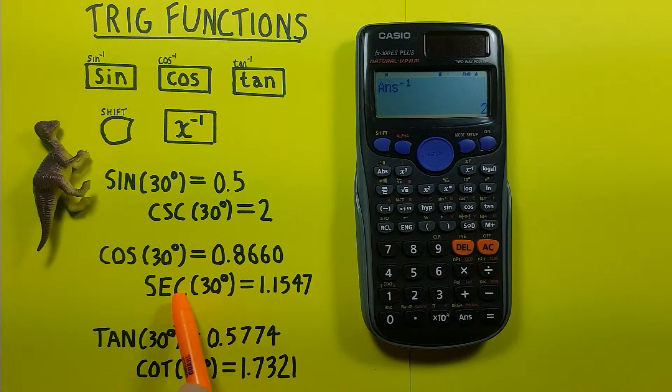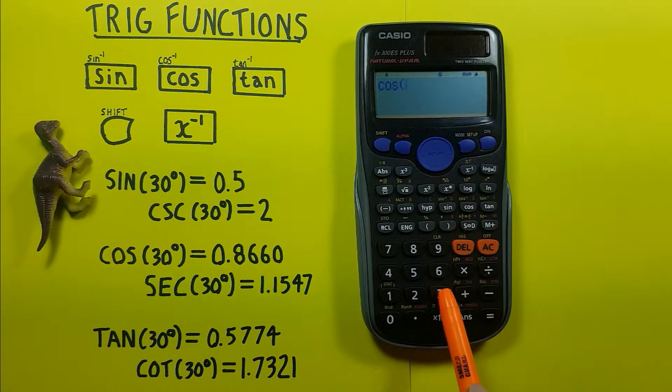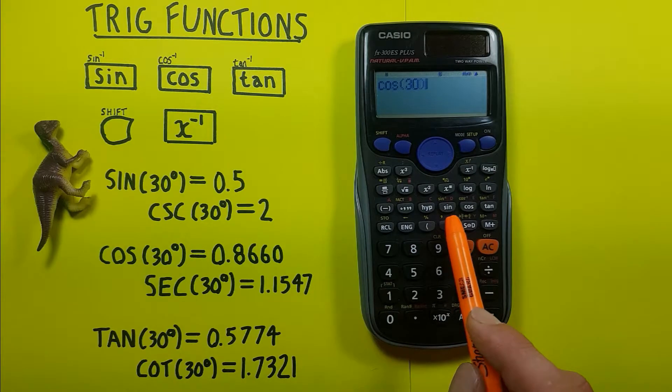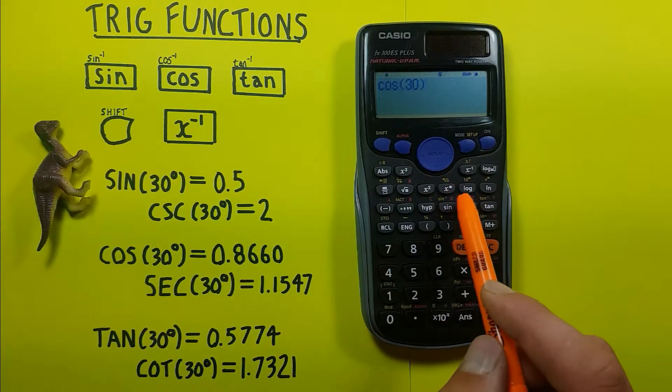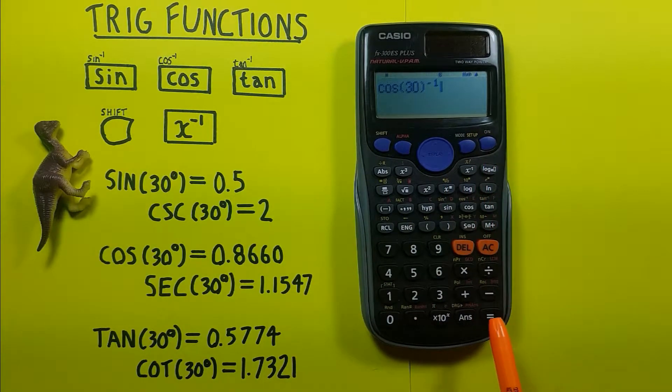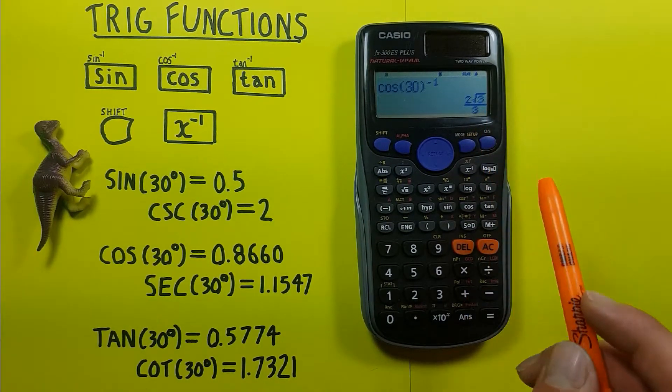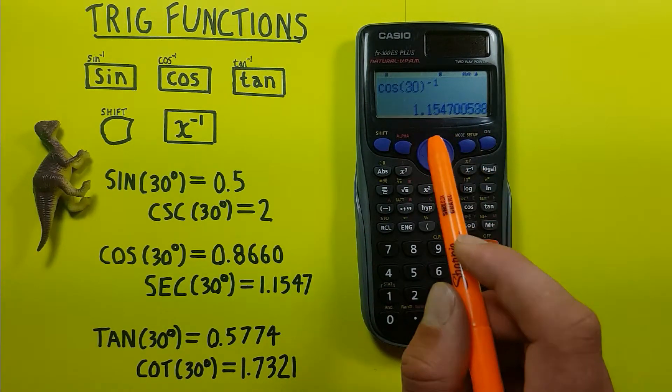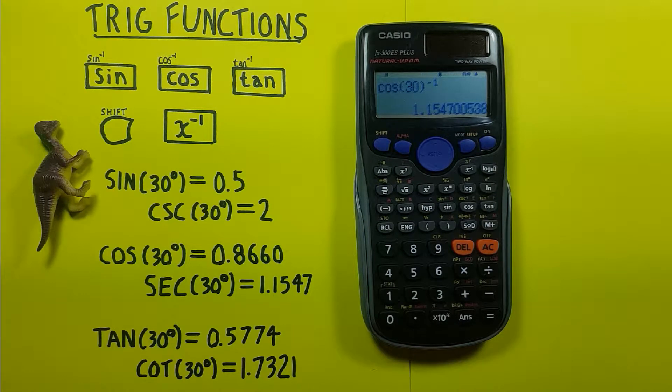For secant we use cos, so we can press cos 30. Now we can do this all in one step by closing the bracket around the 30 and pressing the inverse key and pressing equals, which gives us that, which converts to 1.1547.